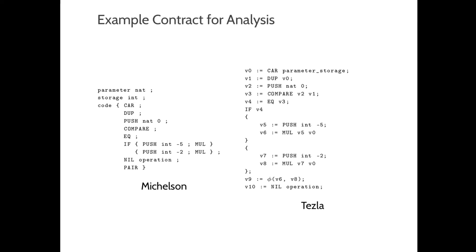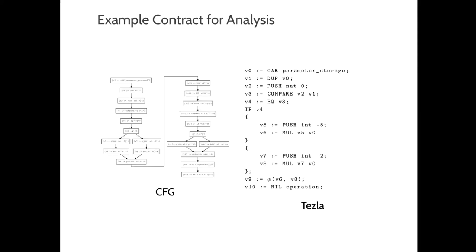Here, we have a simple smart contract example that multiplies the parameter by minus 5 if it is equal to 0, or by minus 2 otherwise, and stores the result in the storage. We also have its Tezla representation that translates to the following CFG.